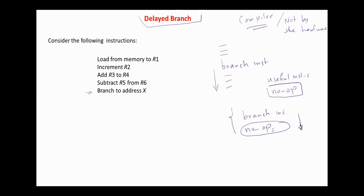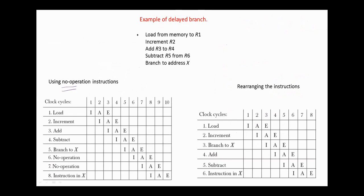Consider the following instructions: load from memory to R1, increment R2, add 3 to R4, subtract R5 from R6, and branch to X. We can solve the conflict in two ways. Solution A: insert two no-operation instructions after the branch instruction. Here the branch address X is transferred to the program counter in clock cycle 7, and the instruction at X starts at clock cycle 8.